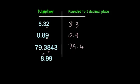Finally, 8.99 rounded to one decimal place. The second decimal place is a 9, so we round up. That makes the 9 become 10, which carries over — so it would be 9.0.